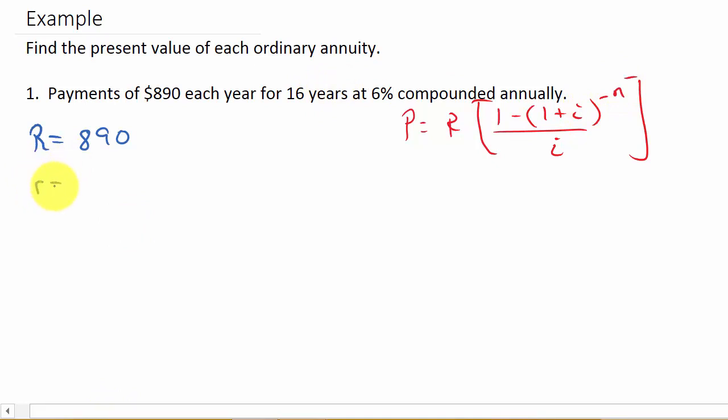So the interest rate is 6%. So R is 0.06. We write it as a decimal. M is equal to the number of compounding periods. Well, it's compounded annually, so M is 1. Alright, so now we can get I. That's R over M, which is 0.06 over 1, which is 0.06.